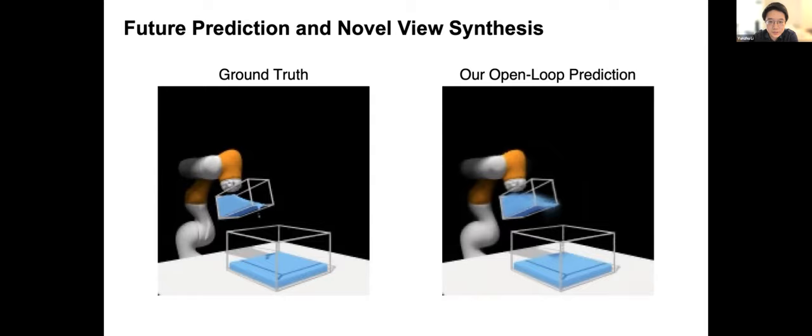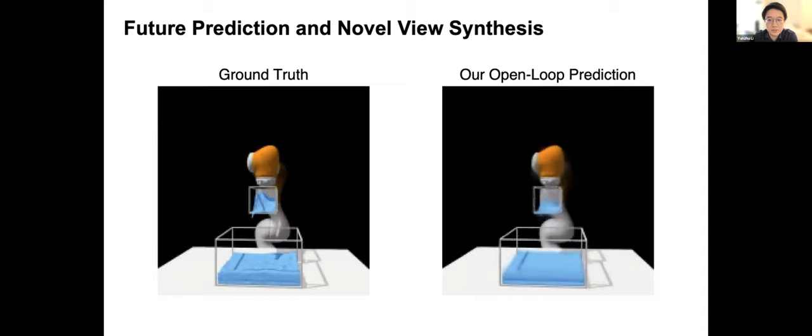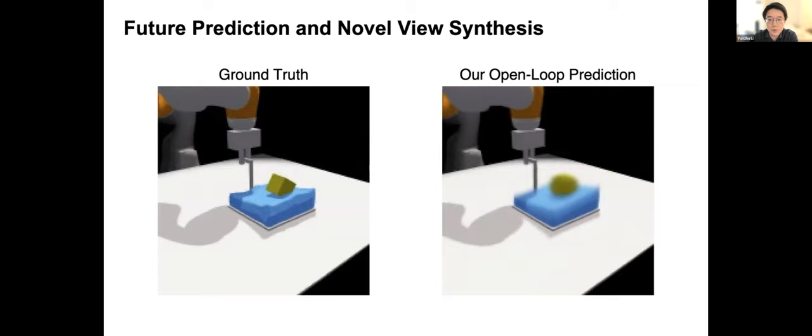Thanks, Shuang. I'm Yunzhu. Here I show the results on future prediction and novel view synthesis. The inputs to our model are the initial visual observations and the subsequent action sequence. The model has to predict into the future in the latent space and render the image when queried from a specific viewpoint.